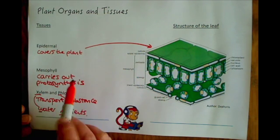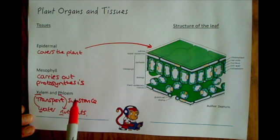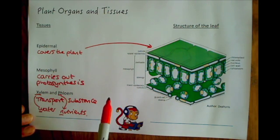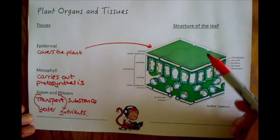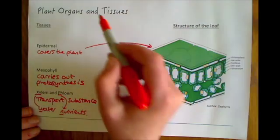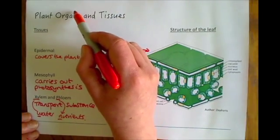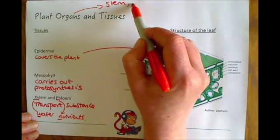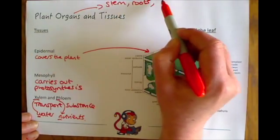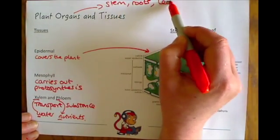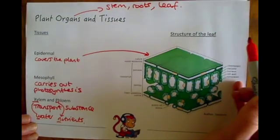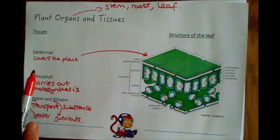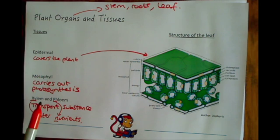All of these three tissues work together in an organ, and the organ that you need to focus on is the leaf. There are several plant organs — for example the stem, the roots, or the leaf — but we're going to focus on the cross section of a leaf because that's where you find all three plant tissues.